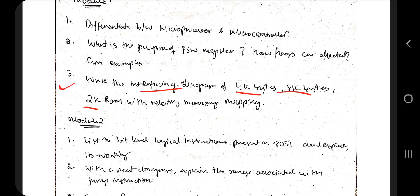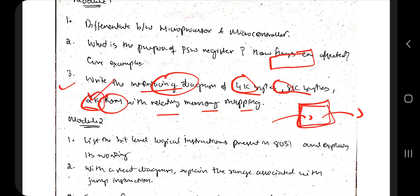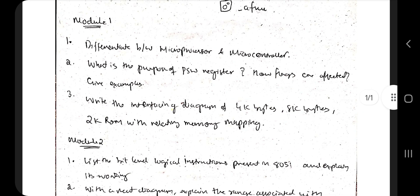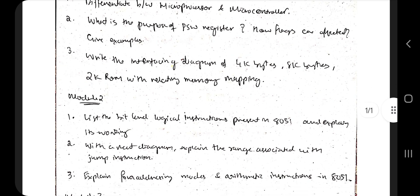Write the interfacing diagram for 4K, 8K, and 2K ROM with memory mapping. Different types of ROM are there and you have to write the interfacing diagram as well as the mapping diagram. Firstly, write the introduction regarding what is interfacing diagram, what is 4K, 8K, and 2K, how they are different, what is ROM. Then write the diagram for each of these and explain what components are used, what are the addressing modes. That's the top three most repeated questions in Module 1.